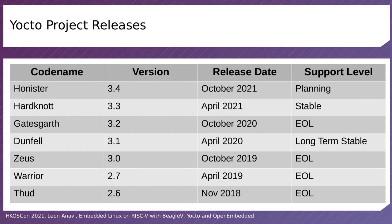Currently the long-term stable release is Dunfell, released in April last year, and it will be maintained for two years until April 2022. The stable version at the moment is 3.3 with the codename Hardknott, and there is a new release planned for October this year.